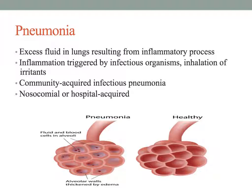Aspiration-type pneumonia occurs when someone aspirates food or fluid into their bronchial airways, often due to difficulty swallowing and trouble maintaining the muscles of swallowing, so food goes down into the bronchioles rather than into the esophagus.